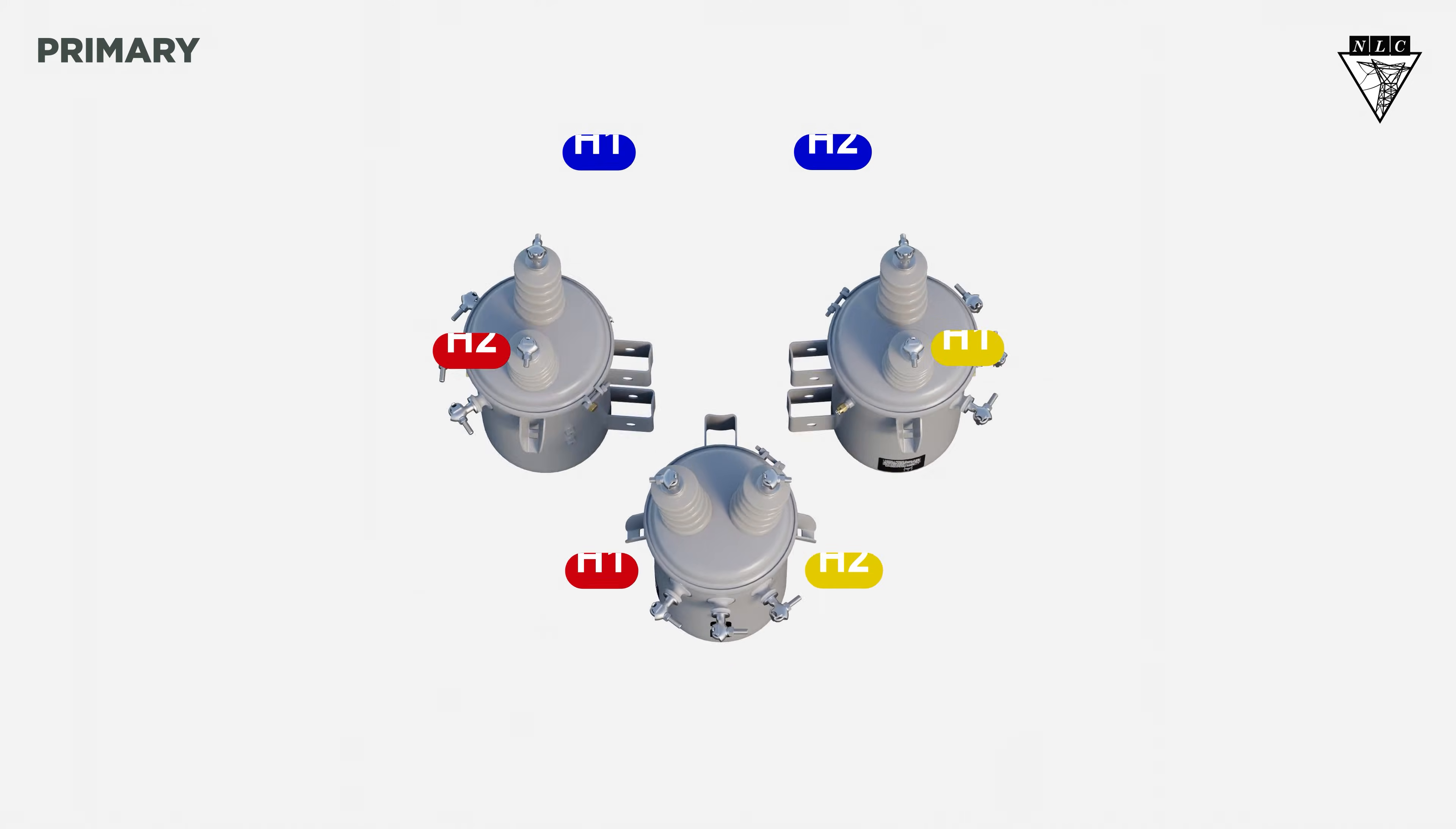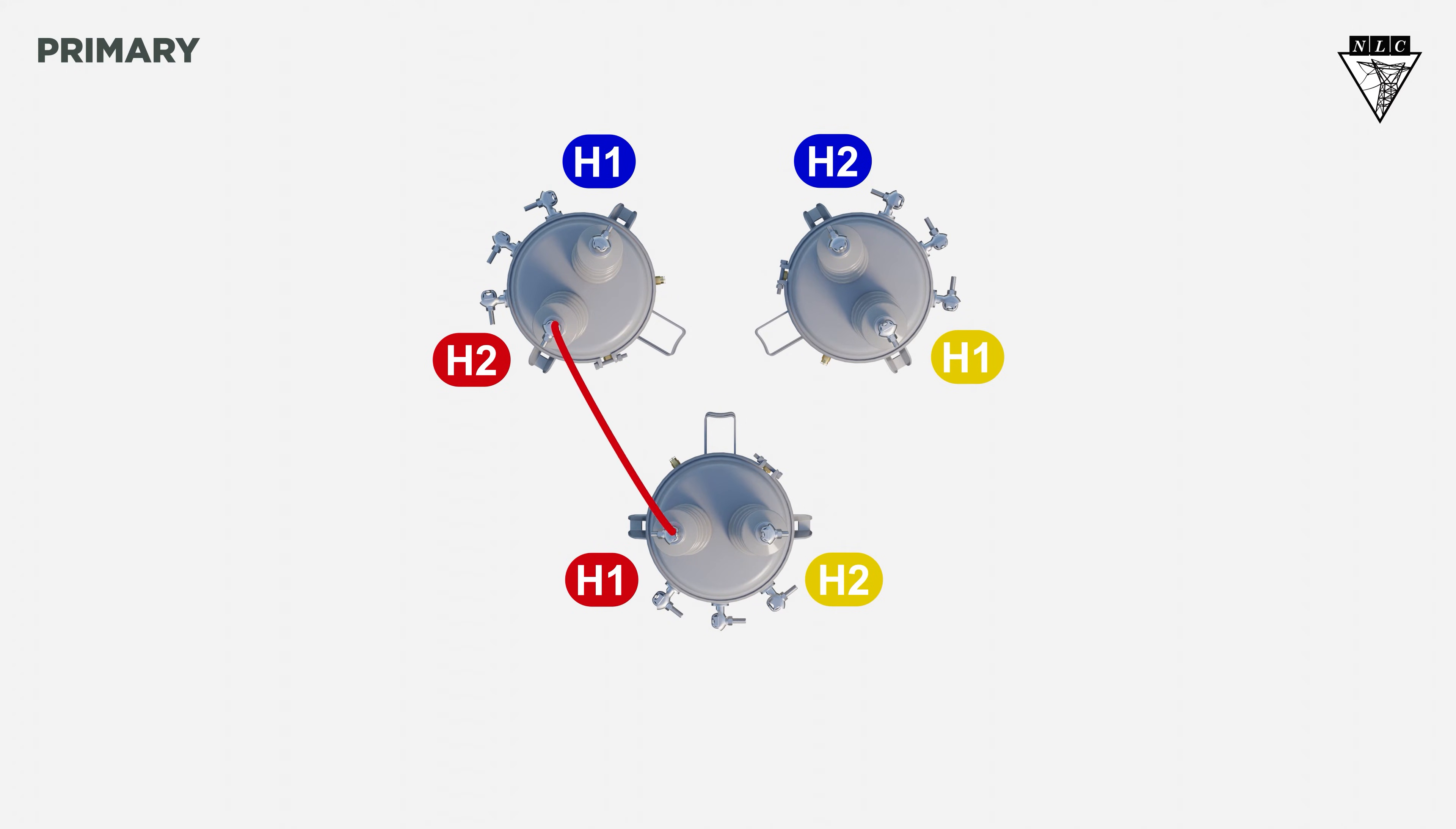Start by connecting the H2 bushing of the first transformer to the H1 bushing of the second transformer. Connect the H2 of the second transformer to the H1 of the third transformer. Then connect the H2 of the third transformer to the H1 of the first transformer.